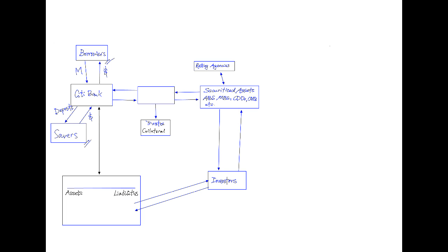What we have established here is the originate-to-hold model. This literally means that the bank — the originator, in this case Citibank — originates these mortgages and holds them till maturity. Now this doesn't stop here. Citibank wishes to make more profit out of this originate-to-hold model, but its activity is limited by capital regulations such as the Basel ratio.